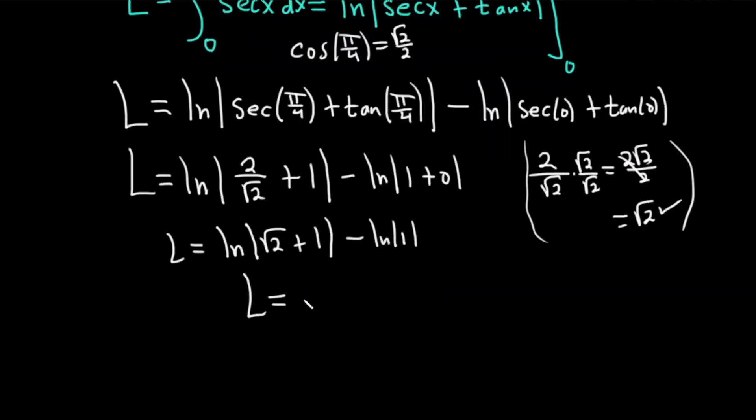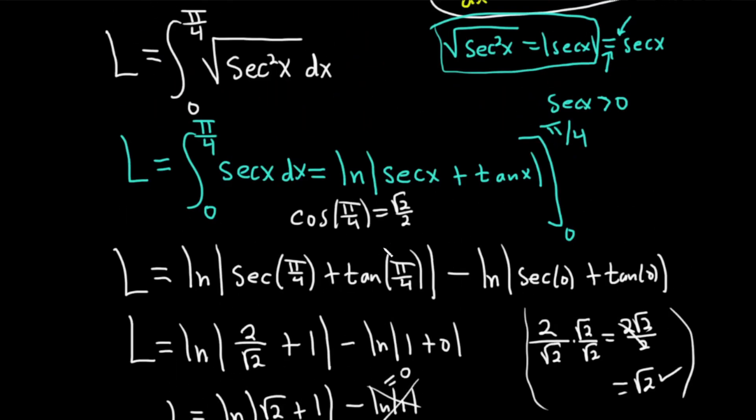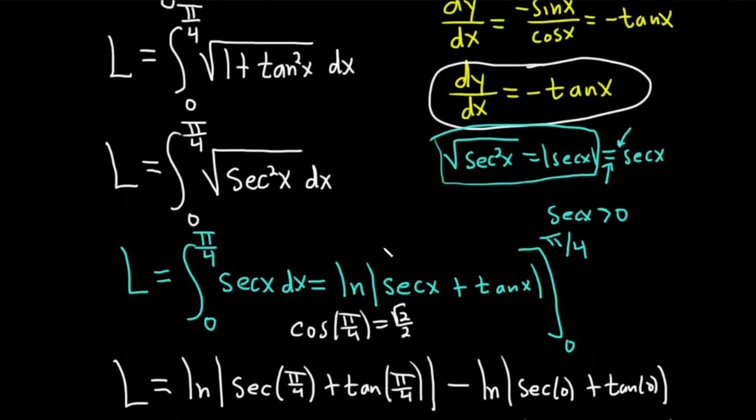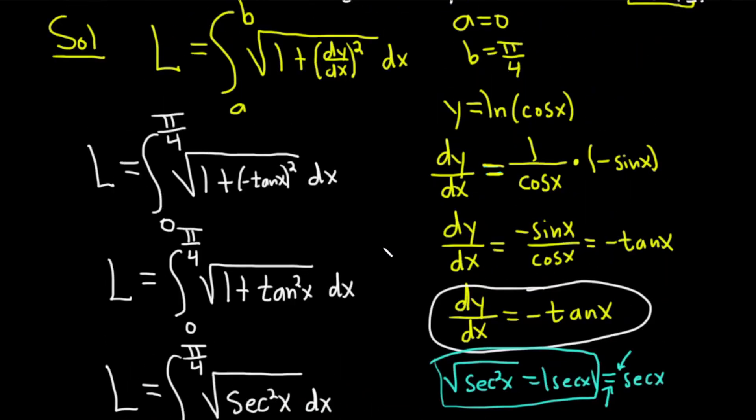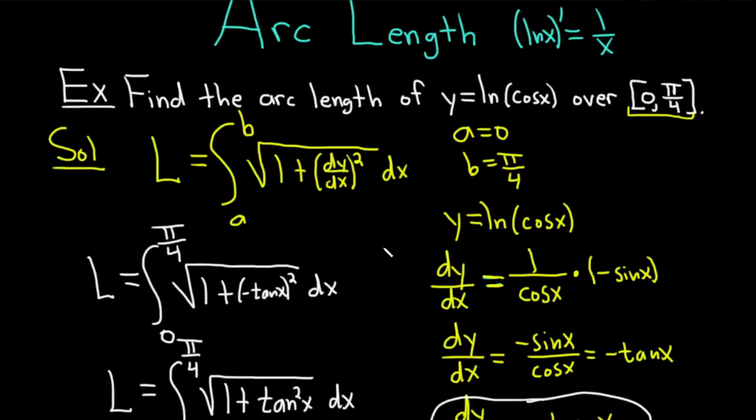So we just get L equals ln of square root of 2 plus 1. You can drop the absolute value because everything's positive. And that would be the arc length. Not a super hard problem, but it still takes some work. The key point with arc length is obviously memorize the formula. And then whenever you have trig functions, like in this example, in an arc length problem, you're probably going to be using identities.